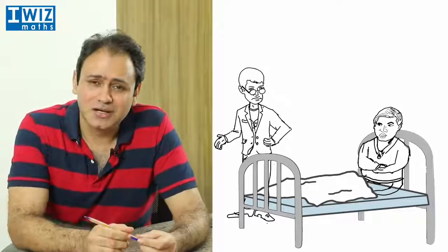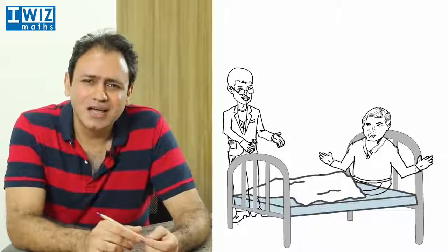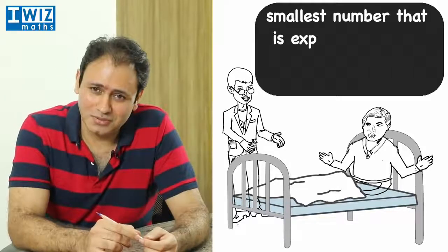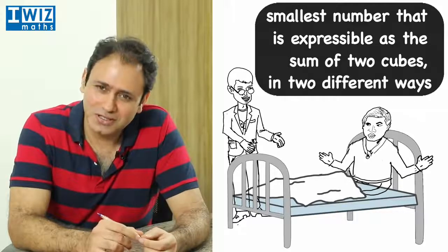But Srinivasa Ramanujan immediately gets back to him and says, no, I mean, it's actually a really interesting number. It's the smallest number that is expressible as the sum of two cubes in two different ways.